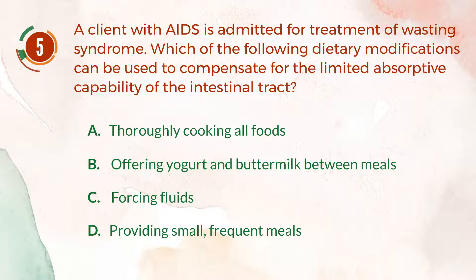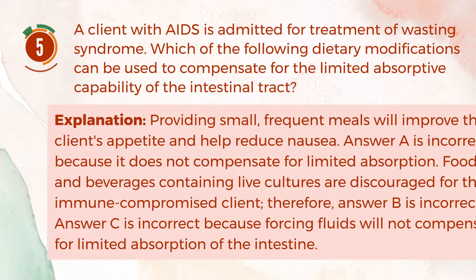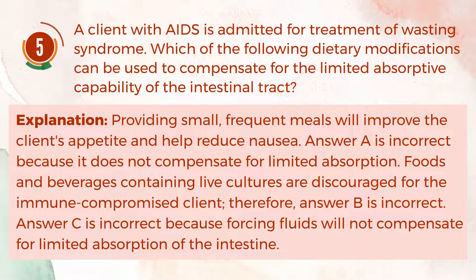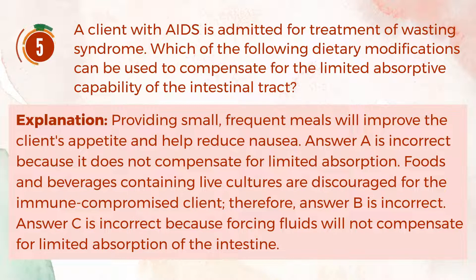The correct answer is D, providing small, frequent meals. Explanation: Providing small, frequent meals will improve the client's appetite and help reduce nausea. Answer A is incorrect because it does not compensate for limited absorption. Foods and beverages containing live cultures are discouraged for the immune-compromised client; therefore, answer B is incorrect. Answer C is incorrect because forcing fluids will not compensate for limited absorption of the intestine.